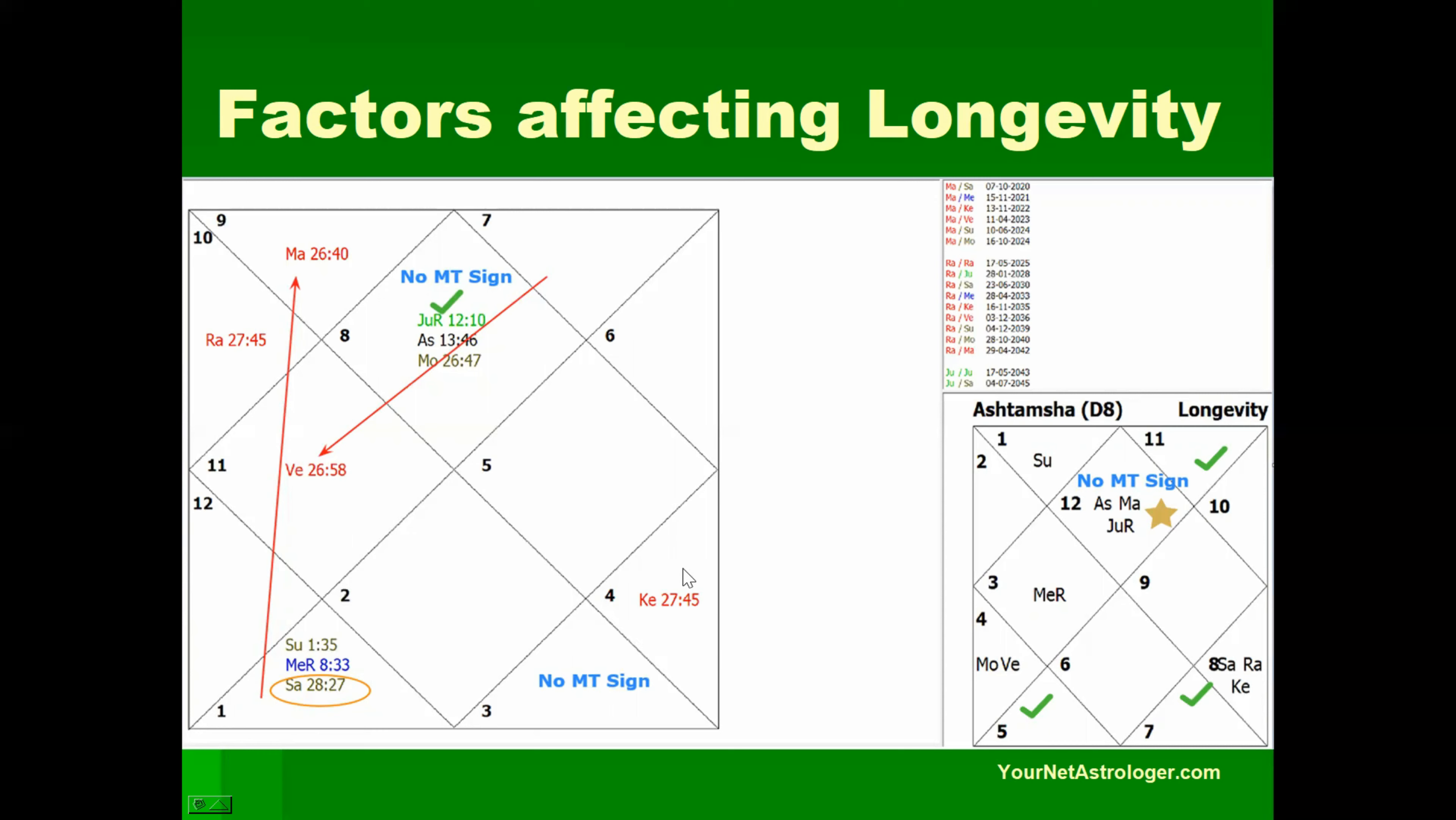It can give some problems in its sub-period and if we analyze the Ashtamsa, we find that it is occupied by two planets. The ascendant is occupied by two planets, Mars and Jupiter. Mars is second lord and Jupiter is tenth lord. So it is a good thing that both benefics are occupying the ascendant of D8. That is a very happy thing and it supports longevity. Another good part of the Ashtamsa is that sixth, eighth and twelfth houses are unoccupied. So no planet is weak due to bad placement. That's a positive for longevity.